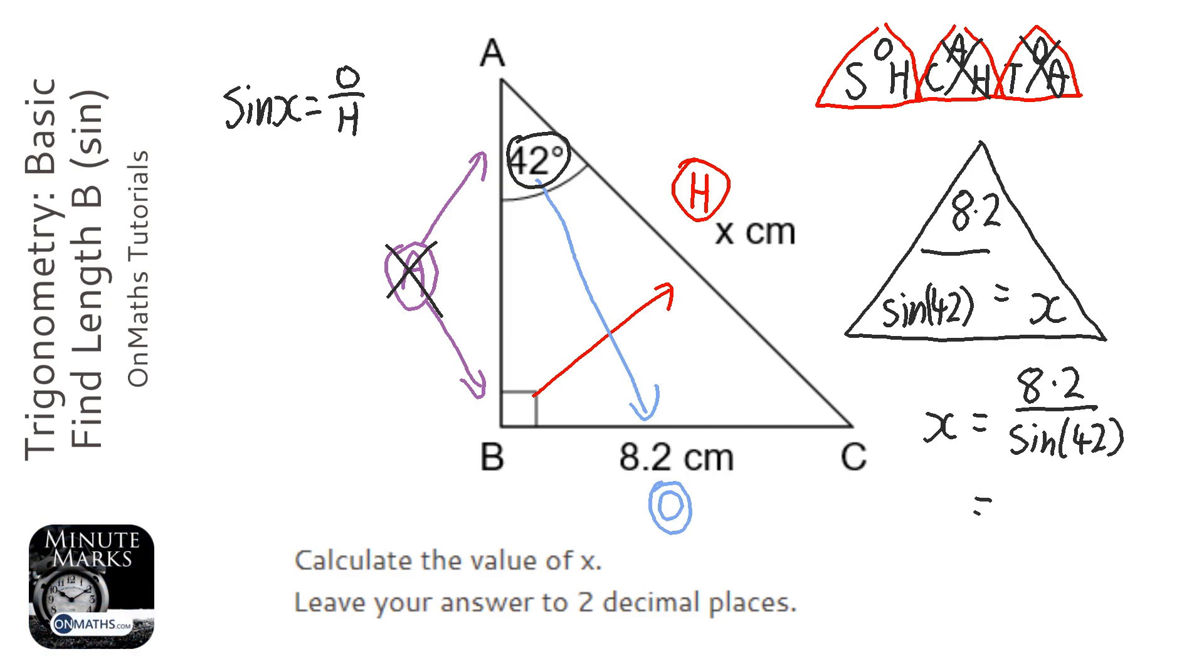Now, piece of advice here, when you're typing that into the calculator, first thing you do is press the fraction button and type in 8.2. Click the cursor button down, click sine, and then 42.